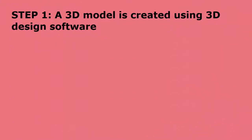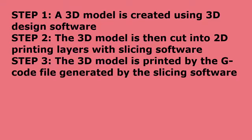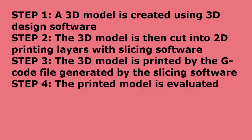The 3D printing process involves four major steps. Step one: a 3D model is created using 3D design software. Step two: the 3D model is then cut into 2D printing layers with slicing software. Step three: the 3D model is printed by the gcode file generated by the slicing software. Step four: the printed model is evaluated and oftentimes the design will go back to step one to improve the design.